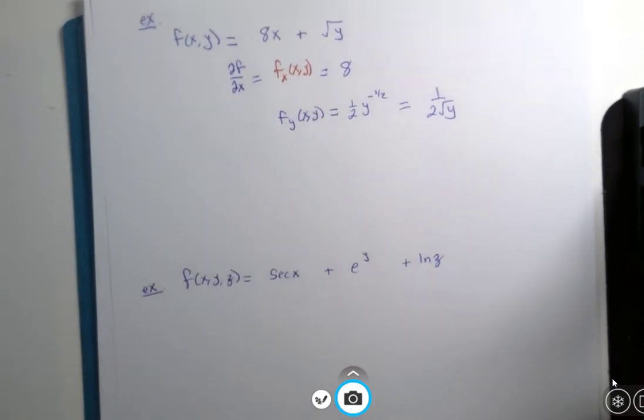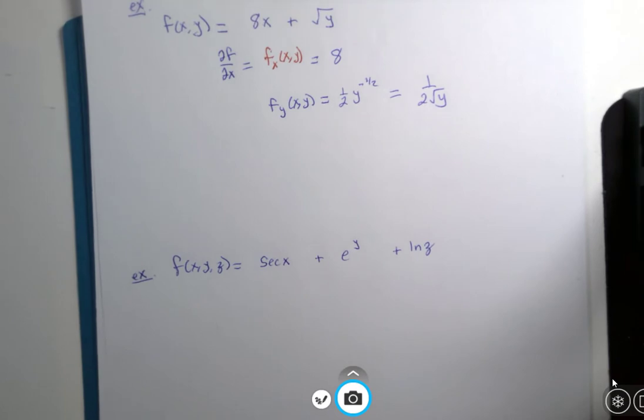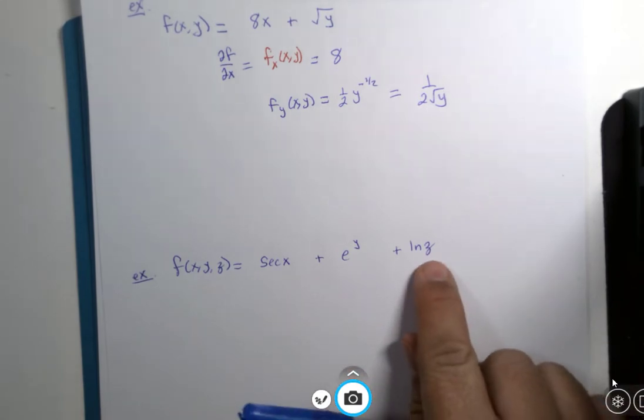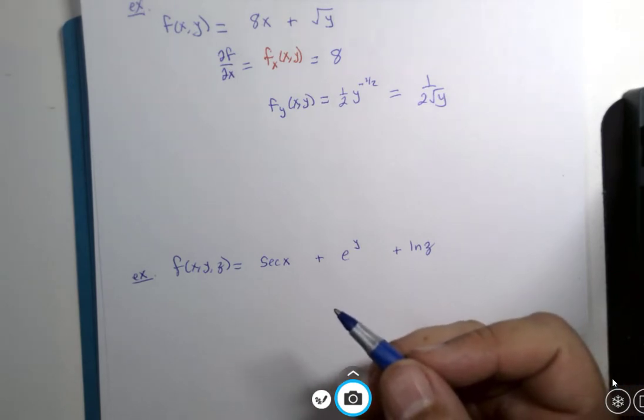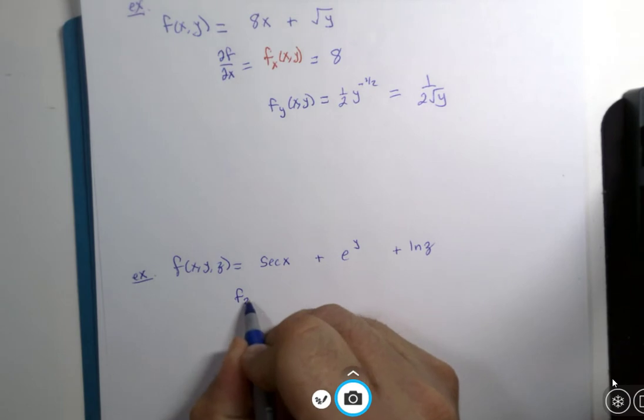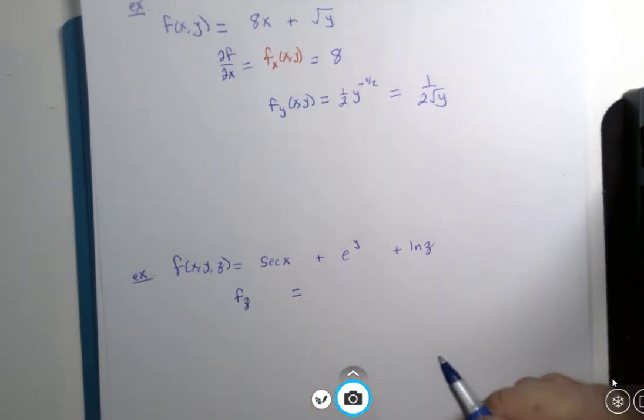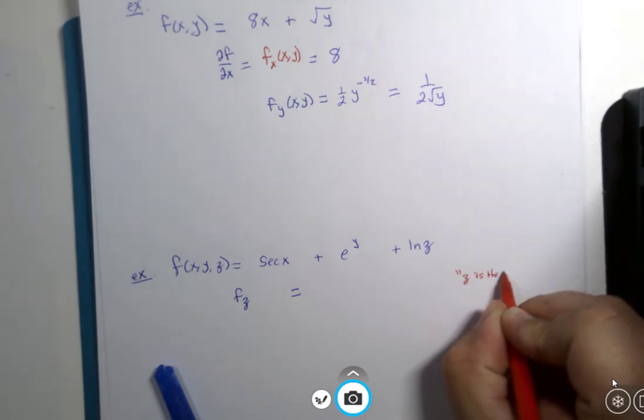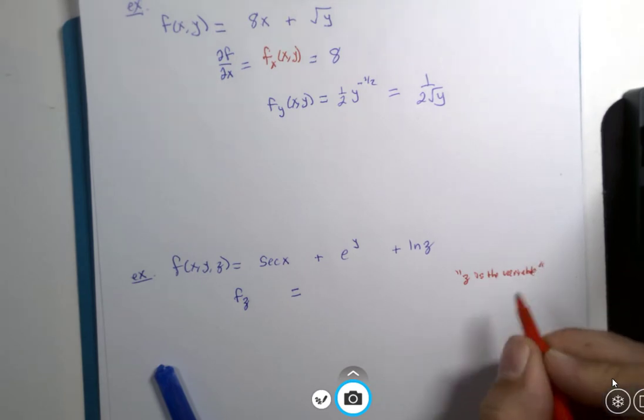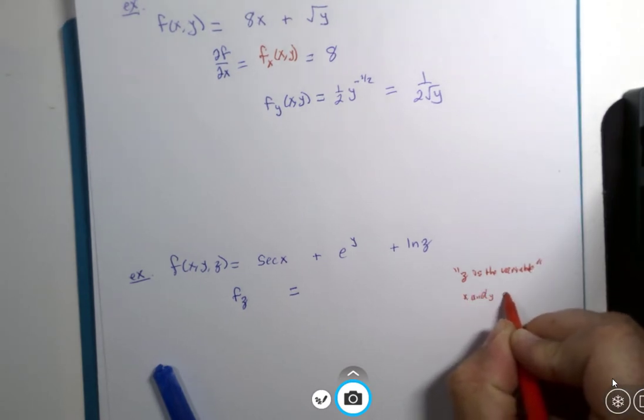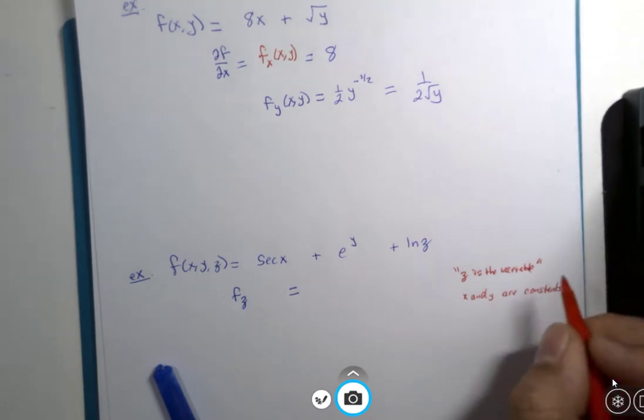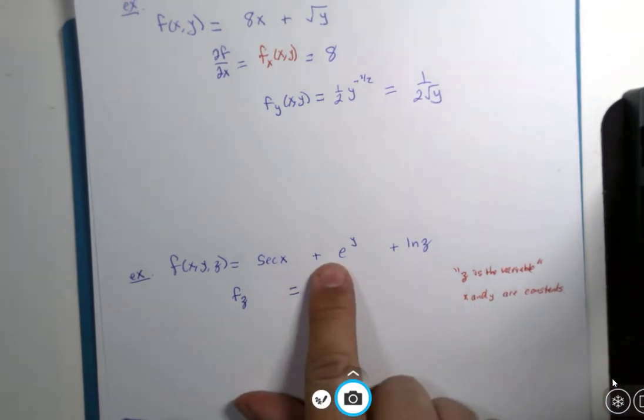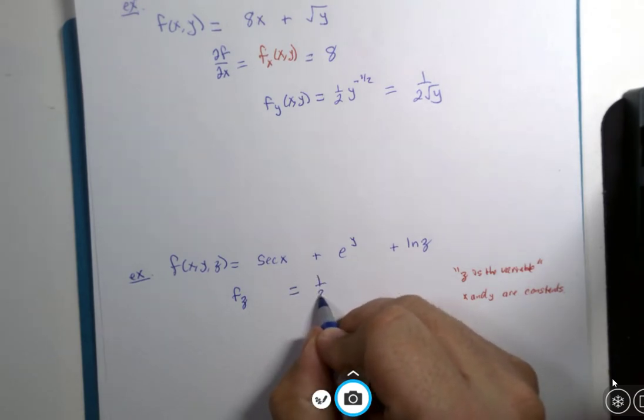Let's see another one. Three variables. Functions can come in more than two variables. Secant of x + e^y + natural log of z. So pick a variable. I'll choose z. The partial derivative with respect to z is going to be, well, that means z is the variable, but the others are constant. x and y are constants and the derivative of a constant is 0. So all I have is the derivative of natural log of z is 1/z.